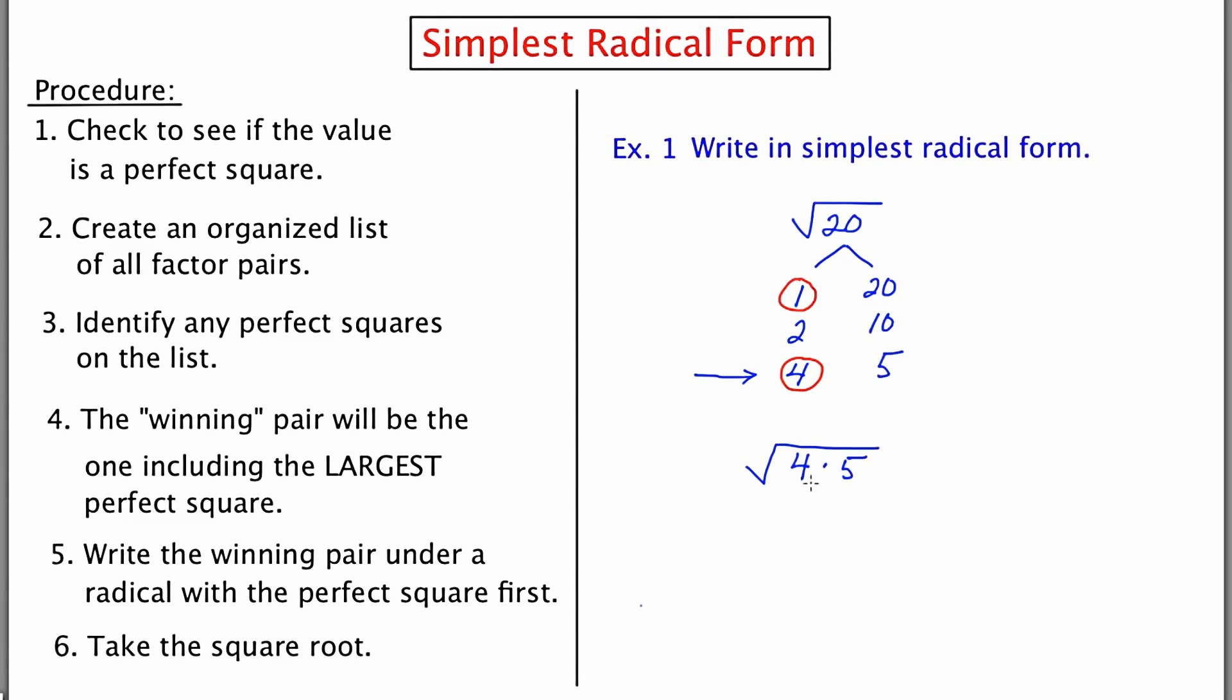So I've got the square root of 4 times 5, which is the same thing as the square root of 20, but the square root of 4 is a perfect square, so I can write it as 2 square root 5. The square root of 4 is 2, and the square root of 5 can't be broken down. So our final answer is 2 root 5.